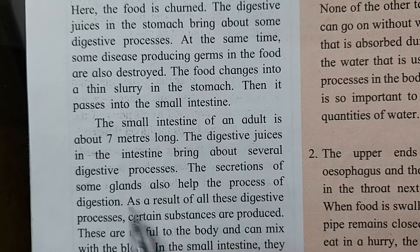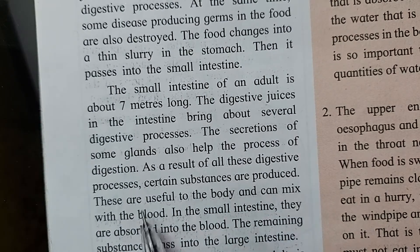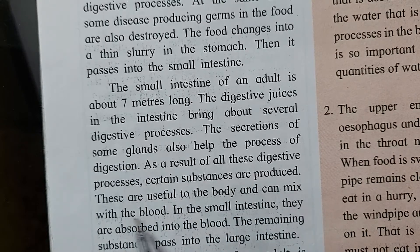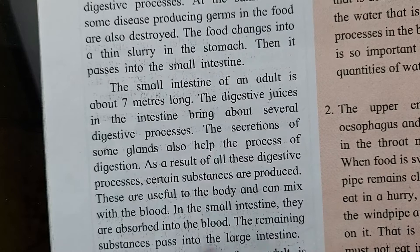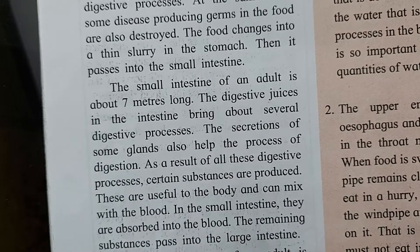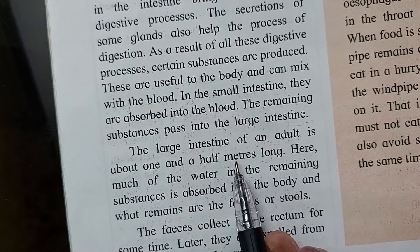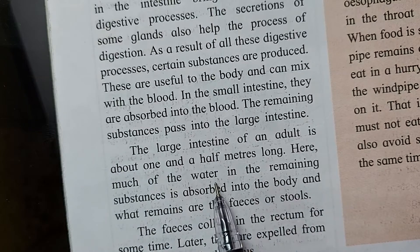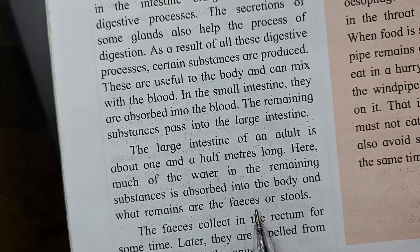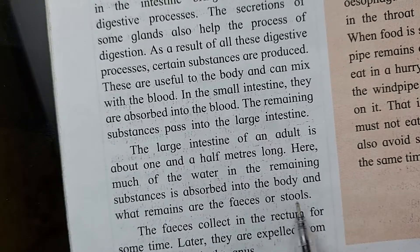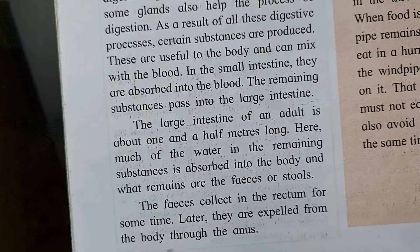The secretion of some glands also helps the process of digestion. As a result of all these digestive processes, certain substances are produced that are useful to the body and can mix with the blood. In the small intestine they are absorbed into the blood. The remaining substances pass into the large intestine. The large intestine of an adult is about 1.5 meters long. Here, much of the water in the remaining substance is absorbed into the body, and what remains are the feces or stools. The feces collect in the rectum for some time and later are expelled from the body through the anus.